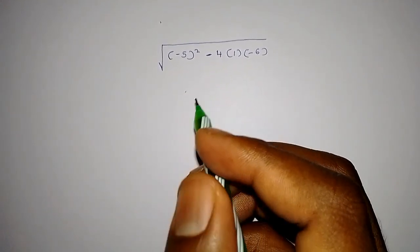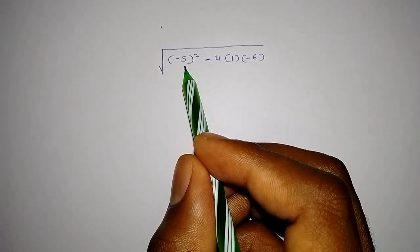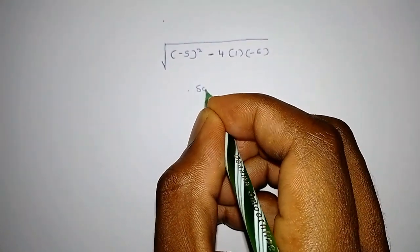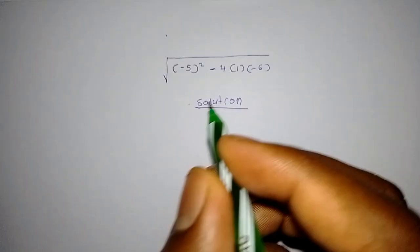To find the square root of this, you are going to start by working with the values that are in the square root sign. So let's work through the solution.